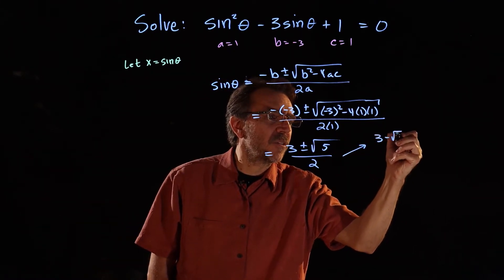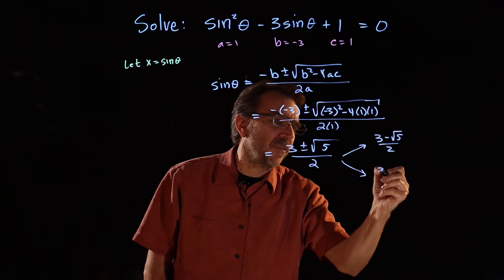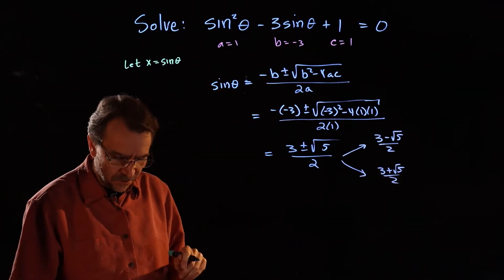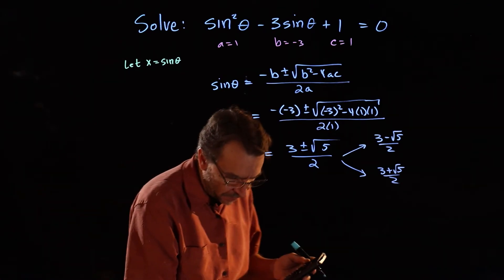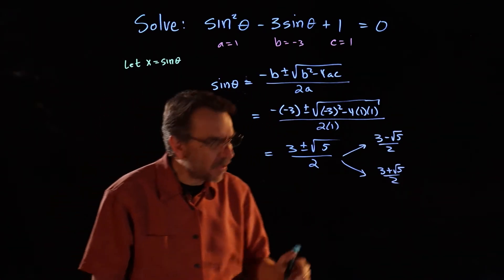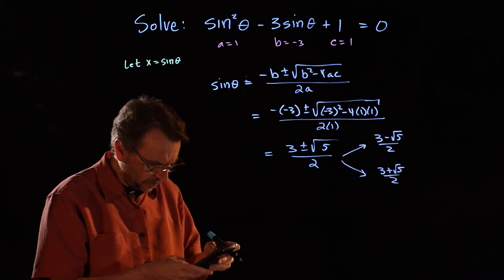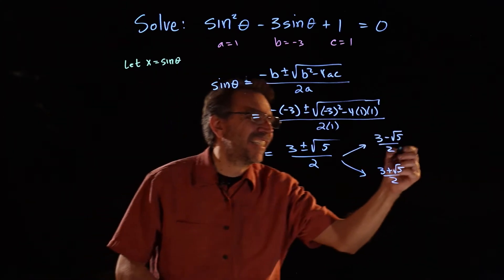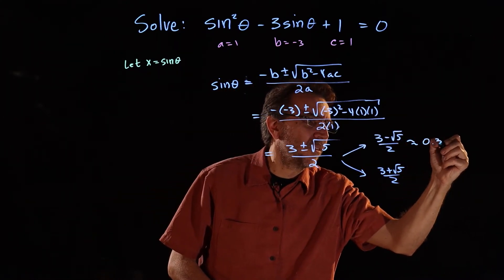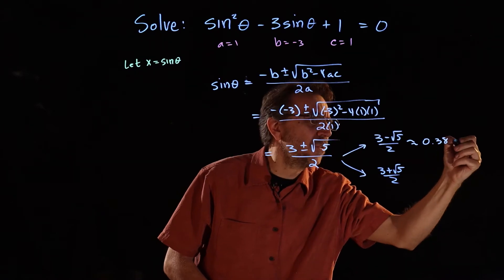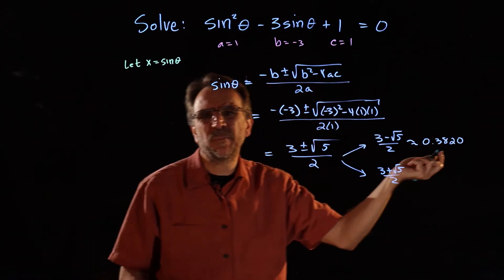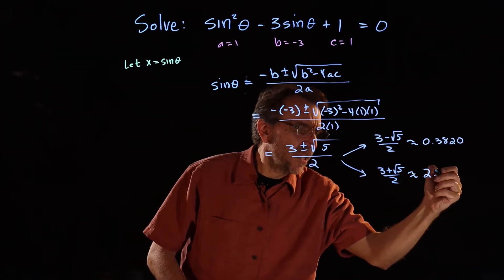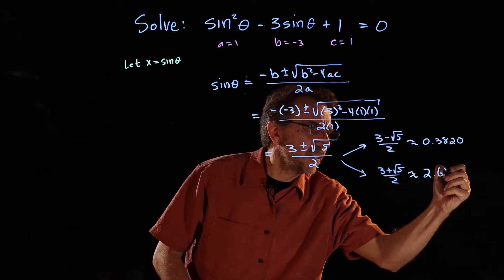So we actually have two values here. We have 3 minus square root of 5 over 2, and we also have 3 plus square root of 5 over 2. Using a calculator: 3 minus square root of 5 over 2 gives approximately 0.3820, and 3 plus square root of 5 over 2 gives approximately 2.6180.